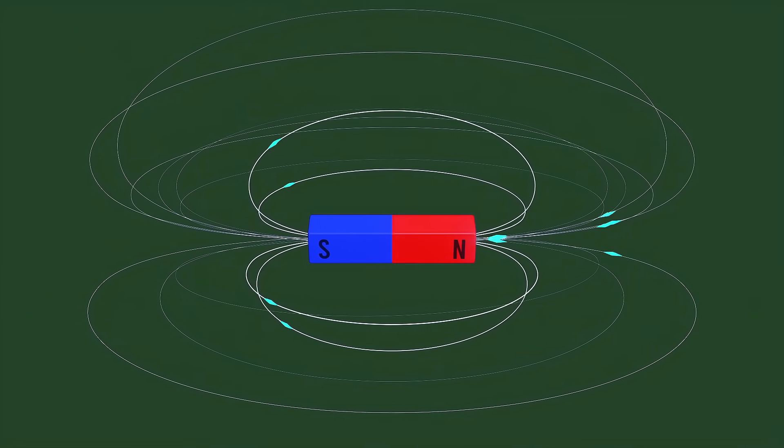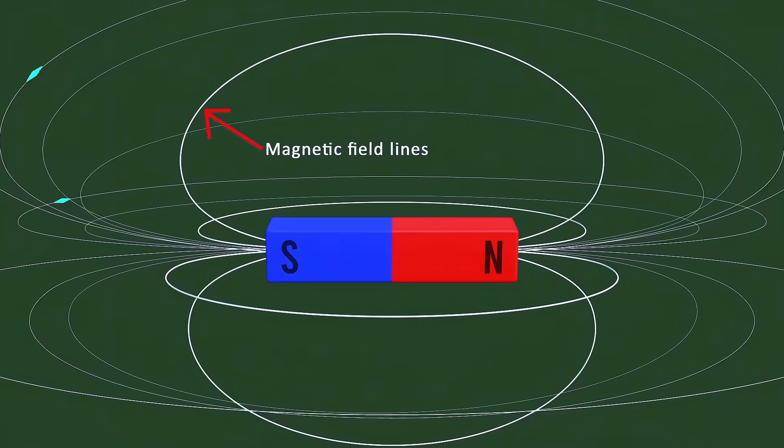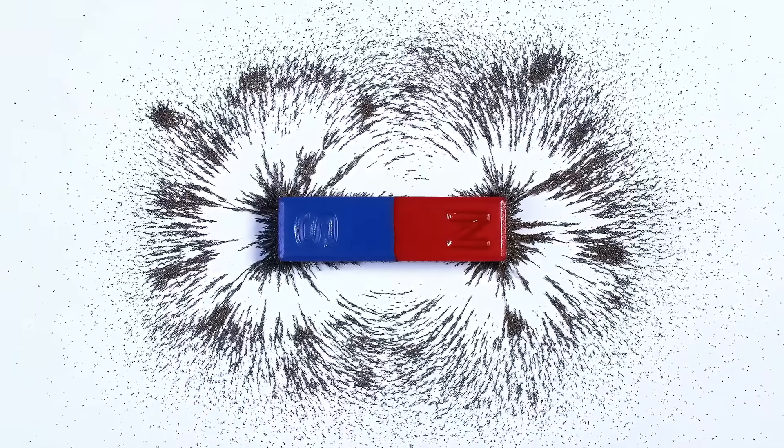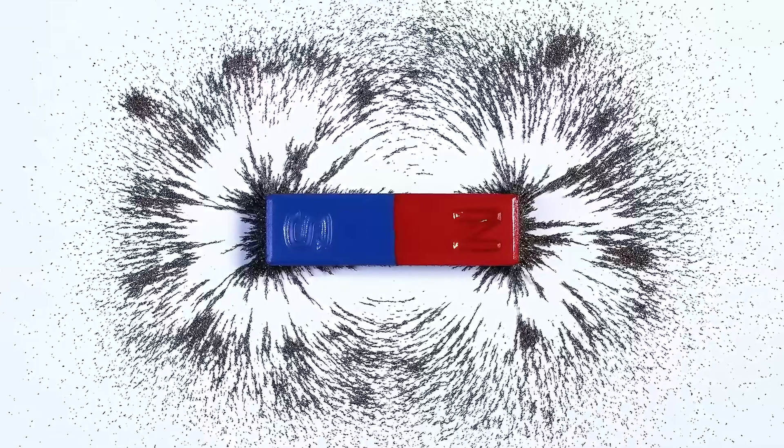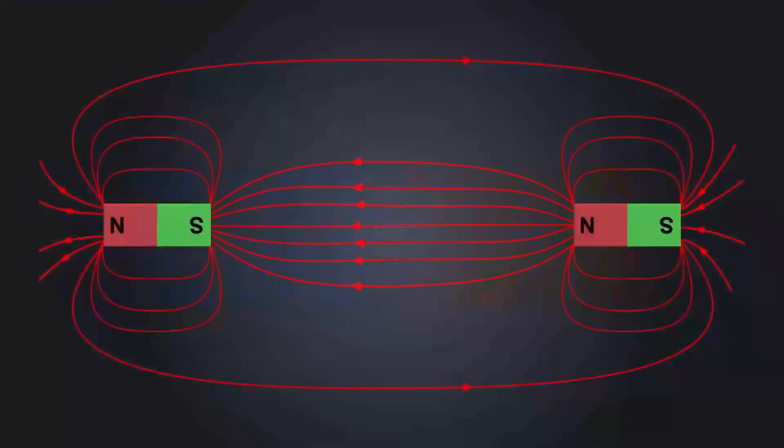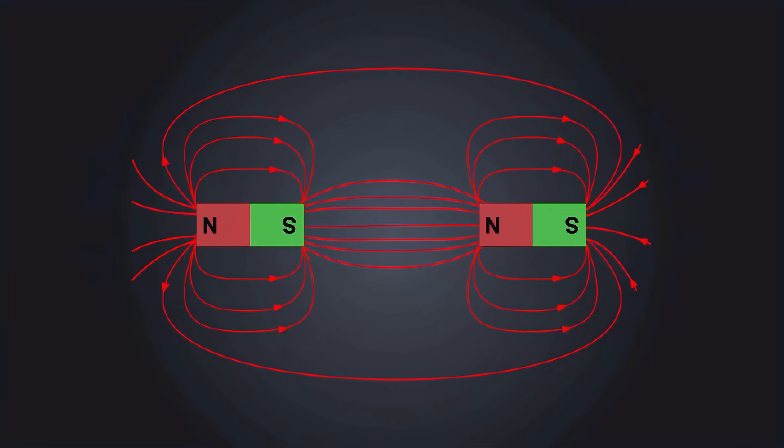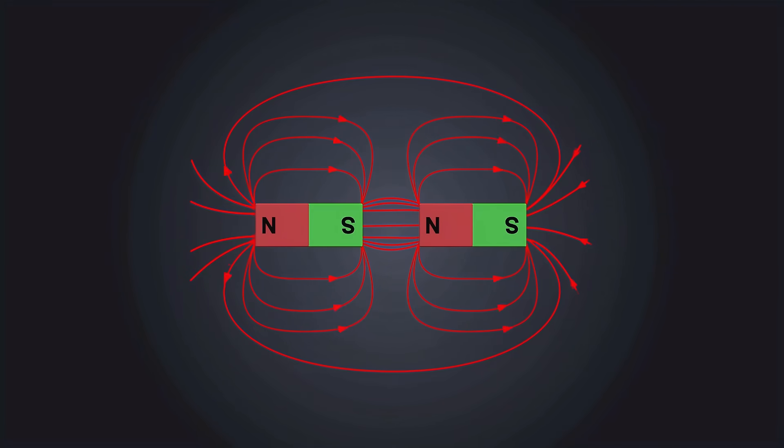Magnets interact through their magnetic fields. These fields are like invisible patterns or lines coming out of the north pole and going into the south pole. You can even see these patterns if you sprinkle iron filings around a magnet. The filings line up neatly along these invisible field lines. When opposite poles of two magnets get close together, their field lines naturally flow from one magnet to another, creating a continuous loop, a stable, lower energy state. Nature loves lower energy, so this configuration pulls the magnets together.